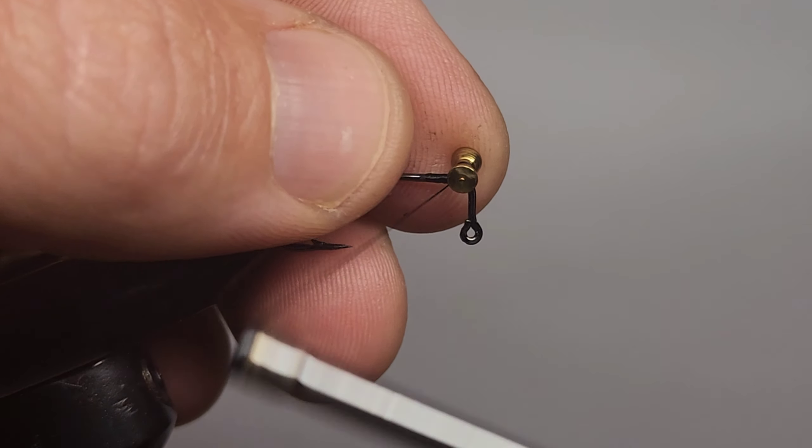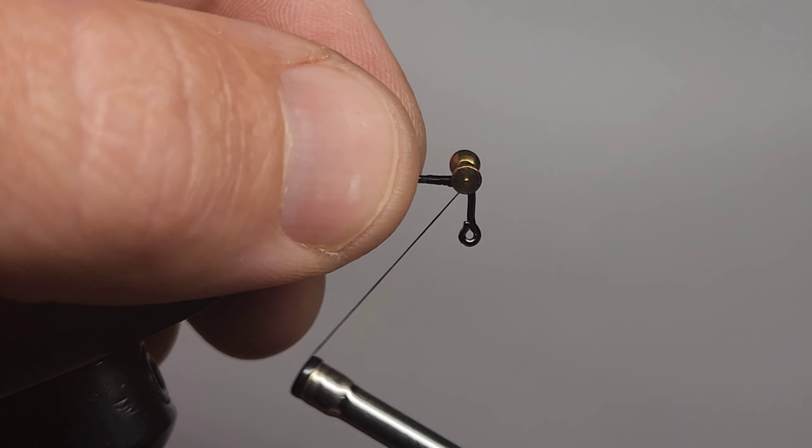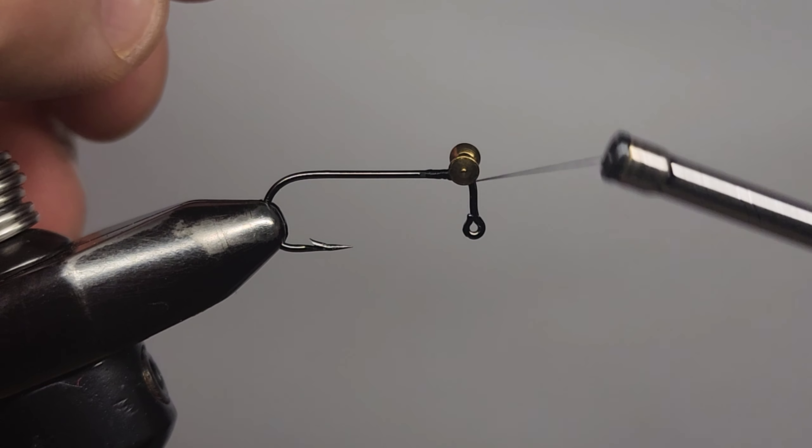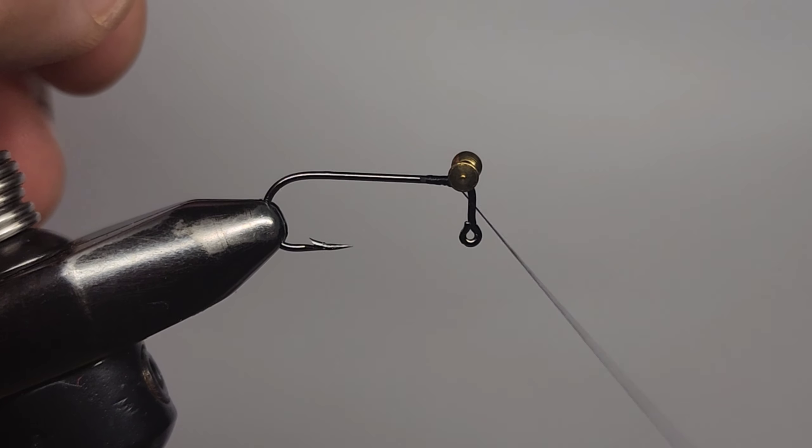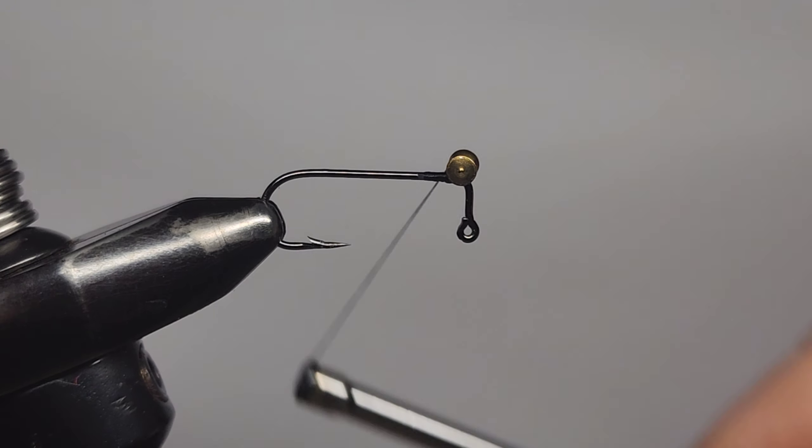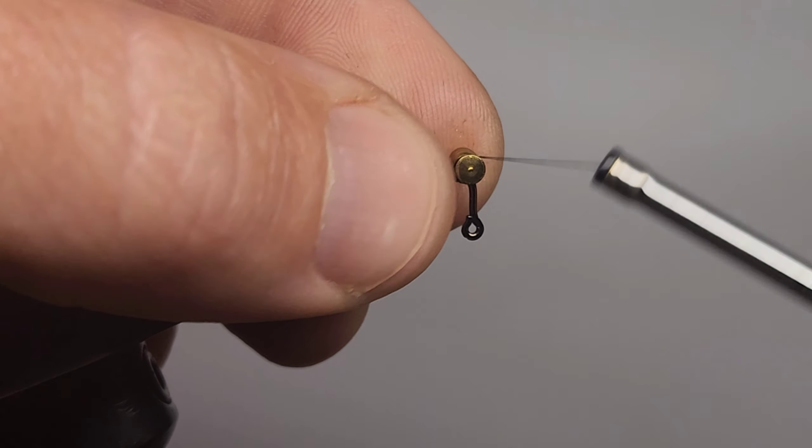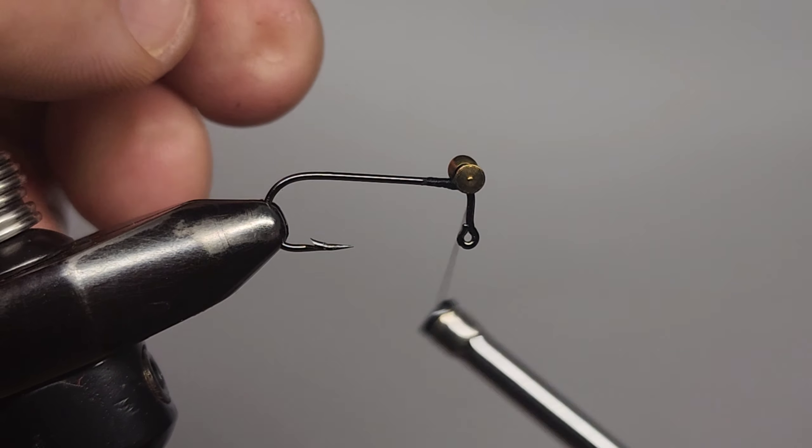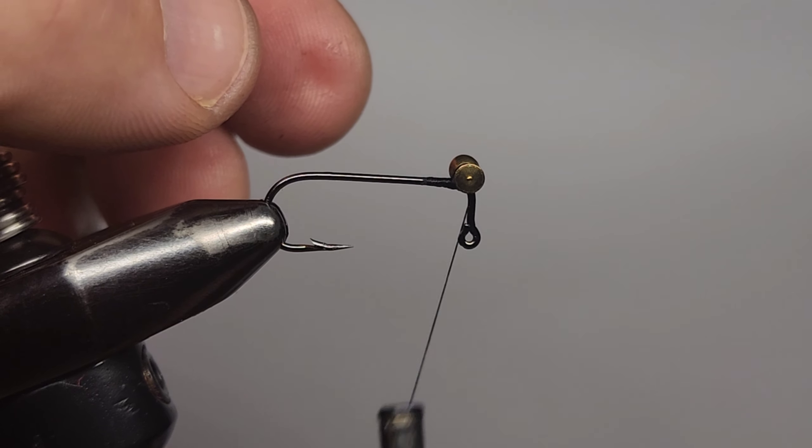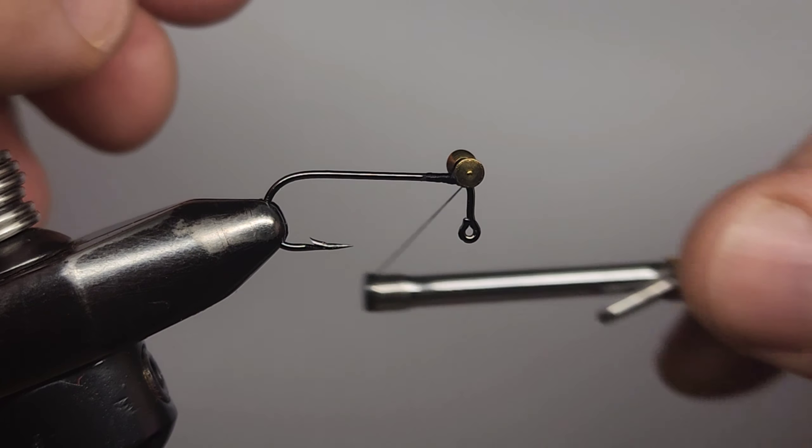I'll tie those in up near the 90 degree bend in the hook. Some diagonal wraps each way. Some figure eights.